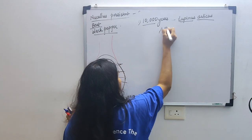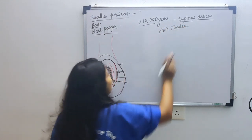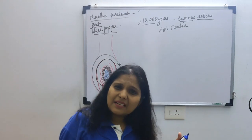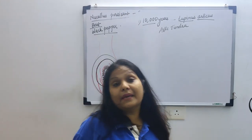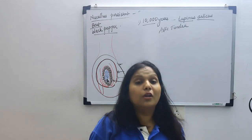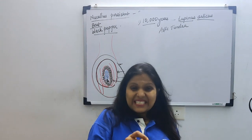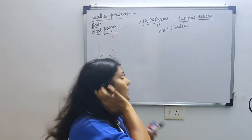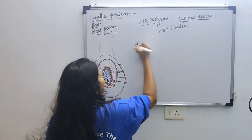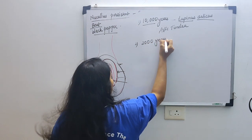Lupinus arcticus is the name of the seed. It was found in the arctic tundra. In arctic tundra, it was preserved for around 10,000 years. You'll ask, how is this possible, ma'am? There is ice there. And in ice, nothing easily decays. So it remained viable or preserved for a very long time.